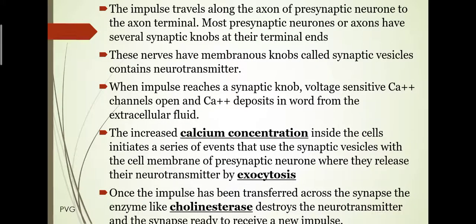The impulse through the synapse travels along the axon of the pre-synaptic neuron to the axon terminal, which has several synaptic knobs at their terminal ends. When nervous transmission occurs and impulse is transmitted across the synapse, a chemical substance is secreted, generally known as the neurotransmitter.